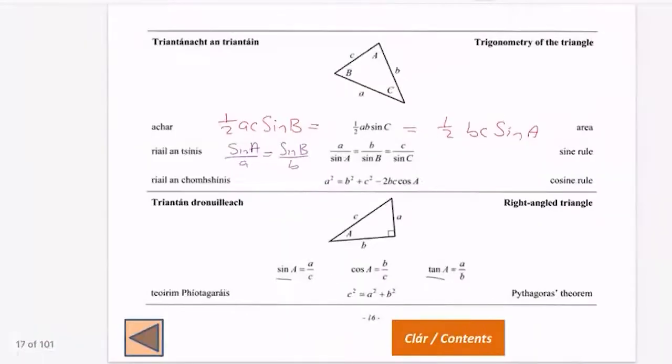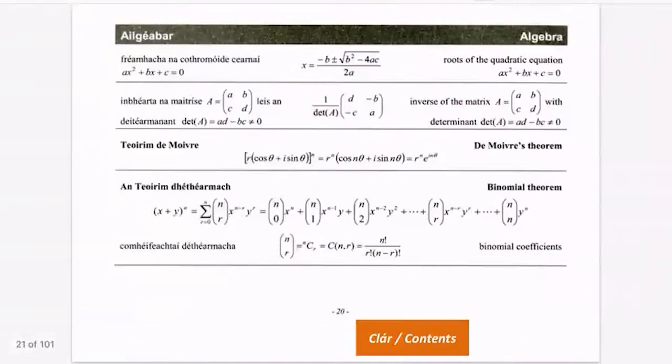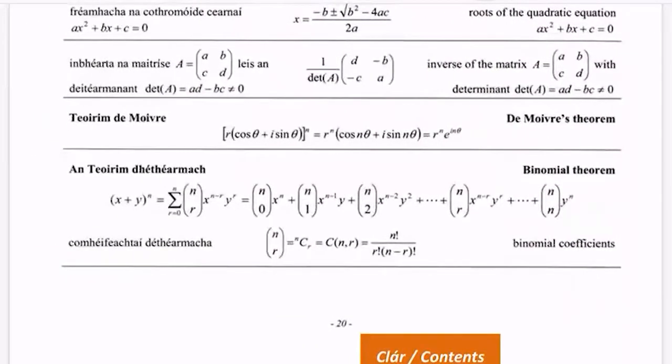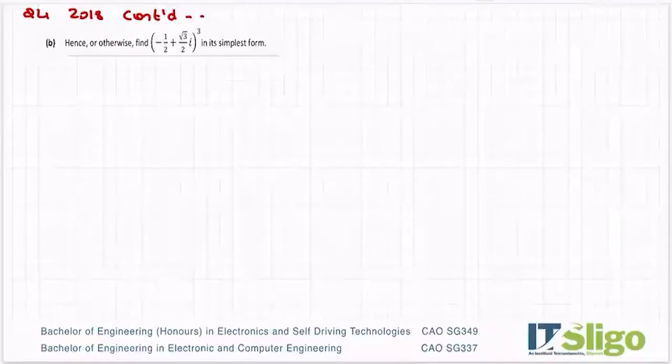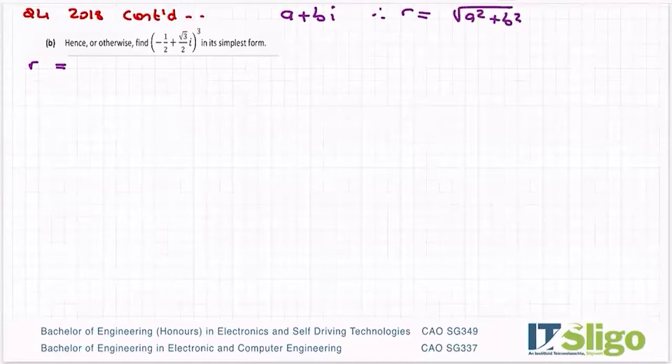And as you know, De Moivre's theorem is written anyway in our log tables here on page 20. So to use De Moivre's theorem, you have to write your complex number in polar form. So there's two pieces of information you need. You need R, the distance out from the origin. And if a complex number is a plus bi, then R is equal to the square root of a squared plus b squared. And the tan of the angle is equal to b over a.